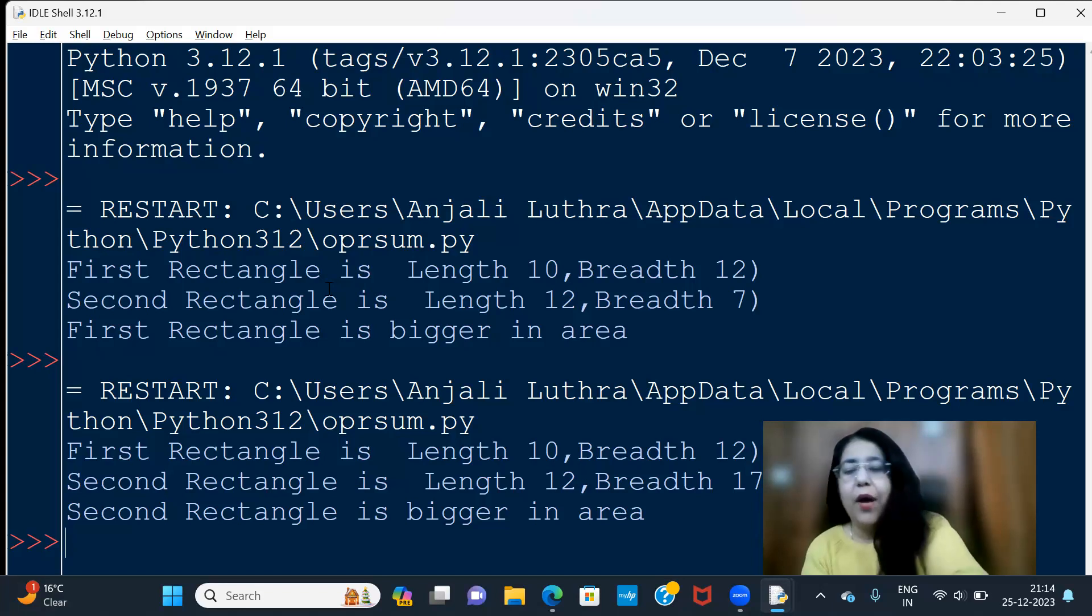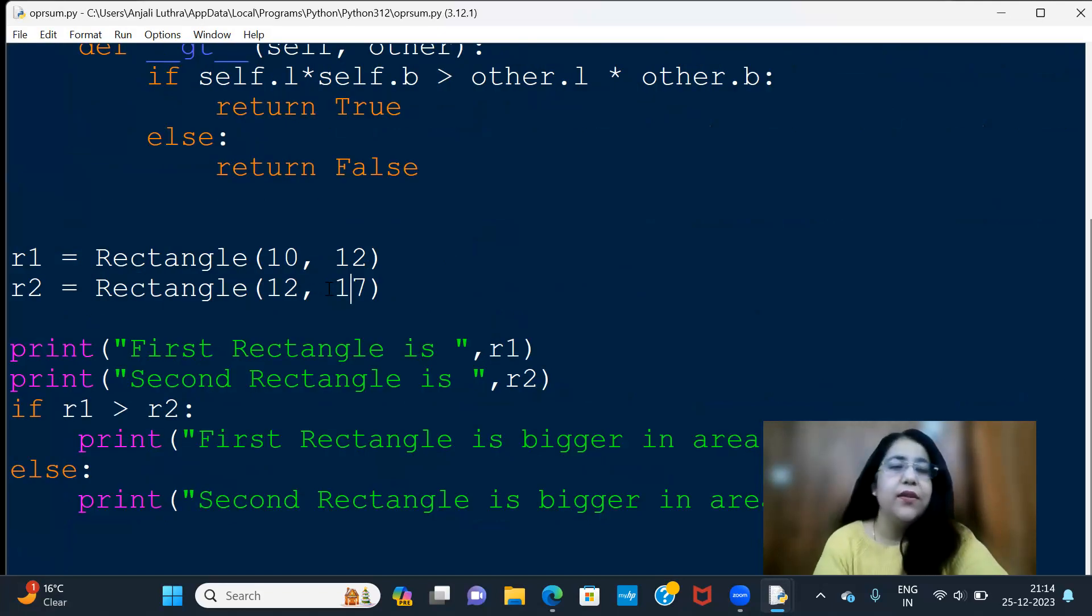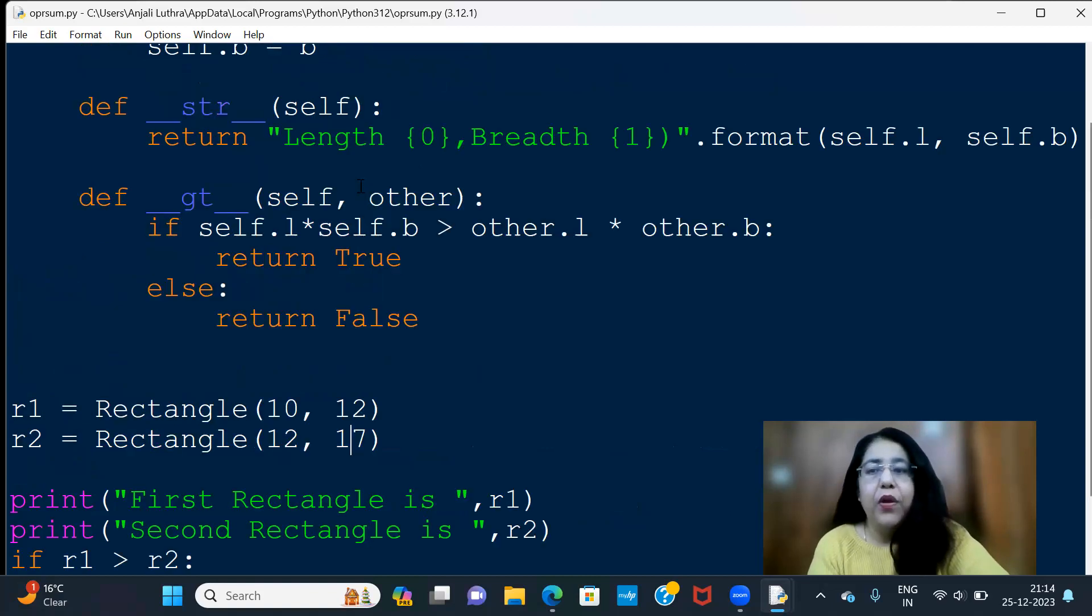So you can overload less than, equal to, greater than, multiple operators can be overloaded. You just have to keep making the methods and overload it and return. You will always do it either true or false. So if true is the condition whatever you are checking, then true otherwise false. Always remember if there is comparison operator, so true or false return.